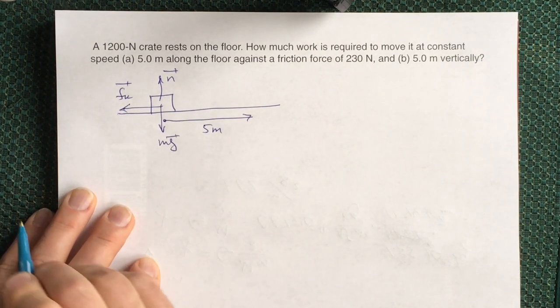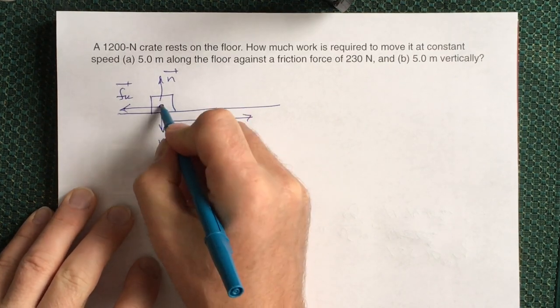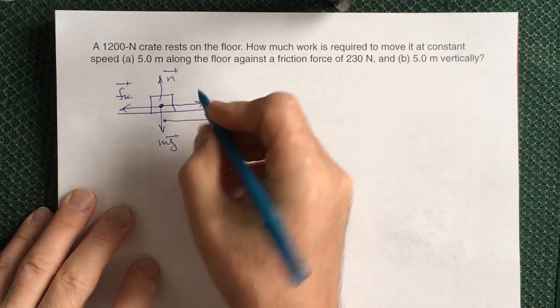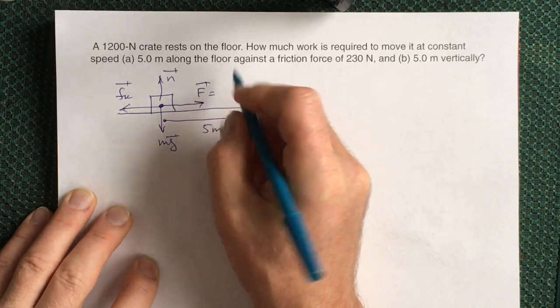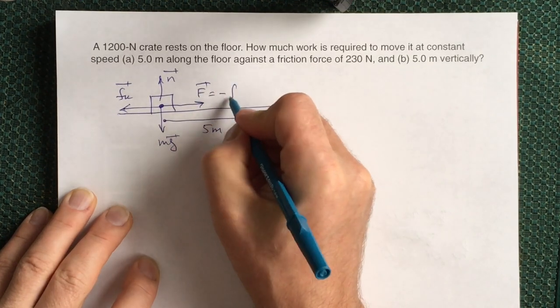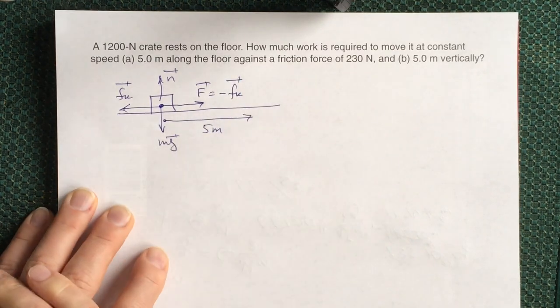We have the magnitude of this friction force. To overcome this friction force you have to apply at least the same force F by magnitude and opposite by direction as your kinetic friction force.